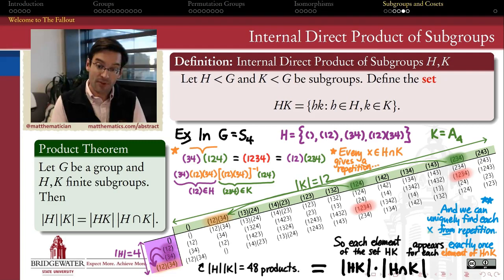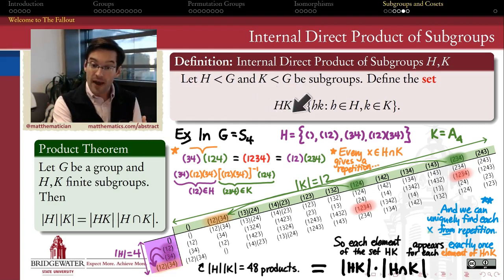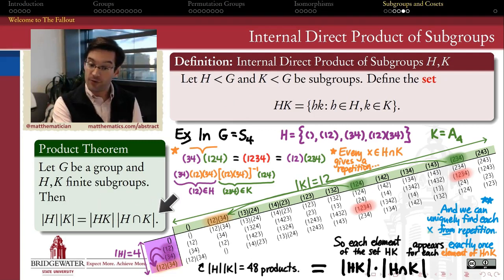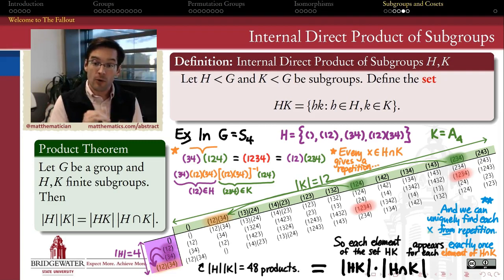And so this is a proof of the product theorem. It's a really interesting result — almost a combinatorial argument — where we carefully count repetitions of elements, and it's abstract algebra that gives us the structure needed to accomplish that counting. The theorem says: if we take the internal direct product of two finite subgroups H and K, the number of elements in the set HK, after accounting for repetitions, satisfies |HK| · |H ∩ K| = |H| · |K|. This is a super important result, not least because it helped us in the next video to characterize how many groups there are whose order is twice a prime number.